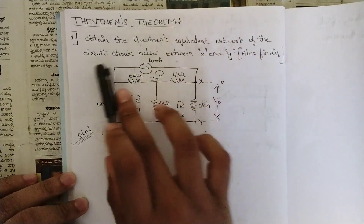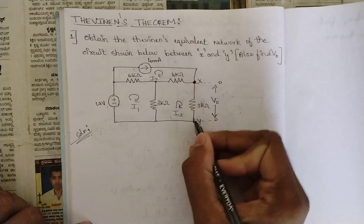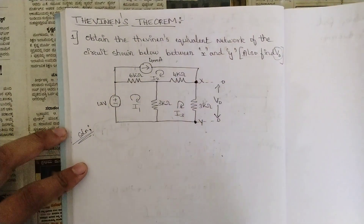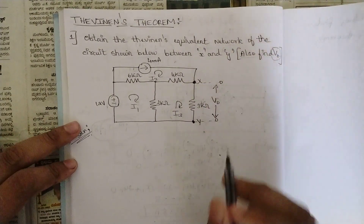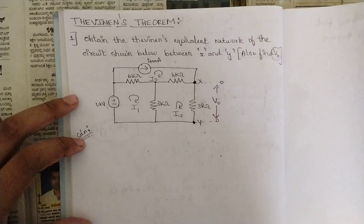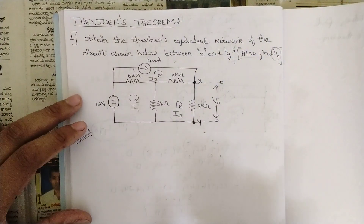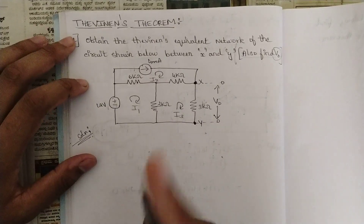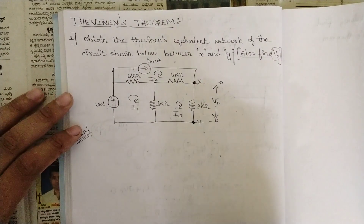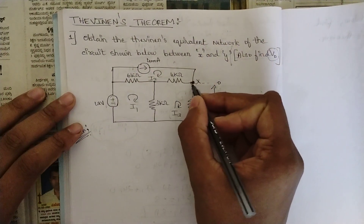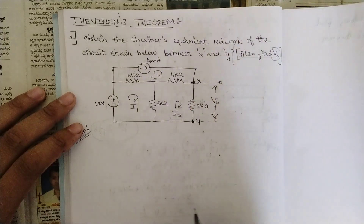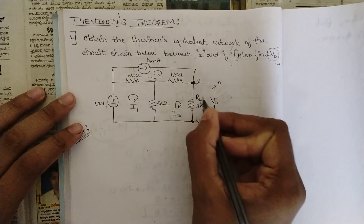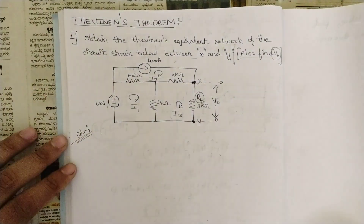The first problem: obtain the Thevenin's equivalent network of the circuit shown below between terminals x and y. Also find V_naught. Let's set aside V_naught for now and focus on obtaining the Thevenin equivalent. In order to solve for the Thevenin equivalent network we need the Thevenin voltage Vth along with the equivalent impedance Z_eq. Whatever resistance is given between the terminals would be our load impedance.